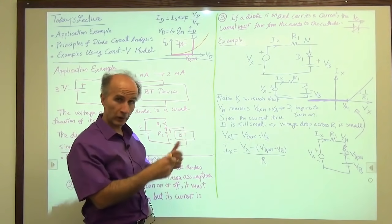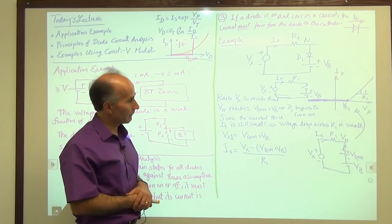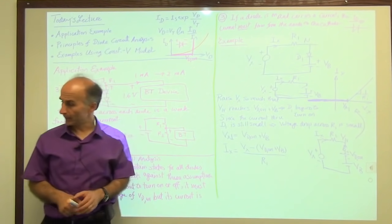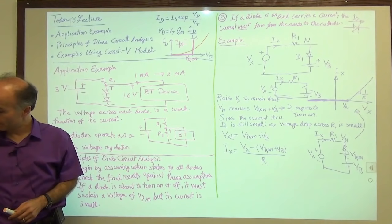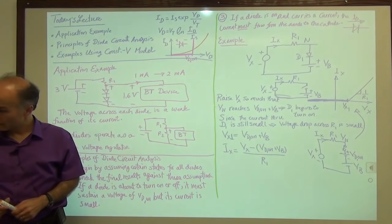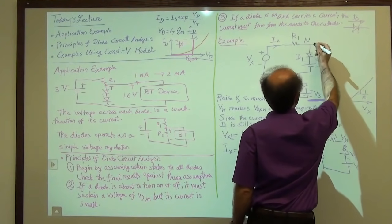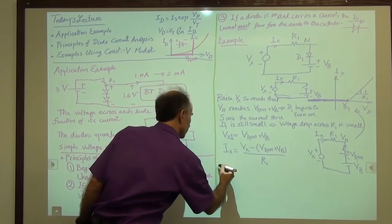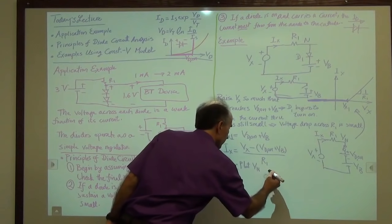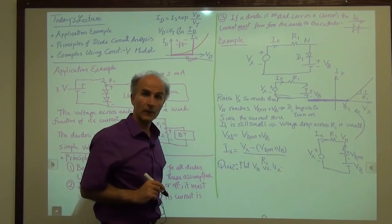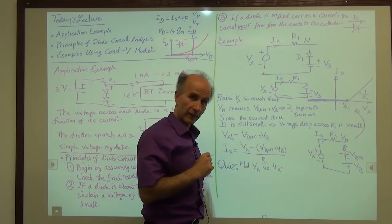Now let's calculate Vn as a function of Vx. Plot Vn as a function of Vx, where Vn is the voltage at node N, as Vx goes from minus infinity to plus infinity.